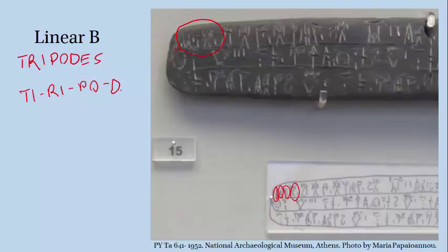So you put them all together and you get ti-ri-po-de. Now you're probably saying to yourself, well that doesn't say 'tripodes.' And you're right — it says ti-ri-po-de. And the reason is that Linear B isn't actually always a very good system for writing Greek.